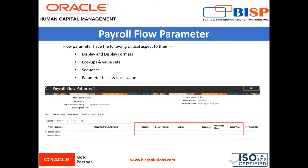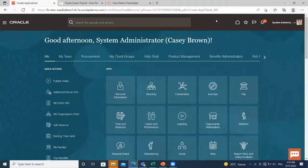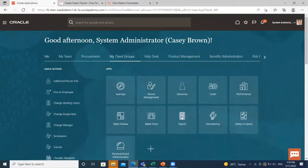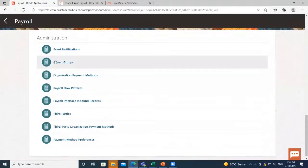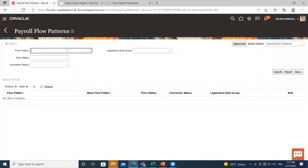Now let's move on to the application where I'll show you how to copy an existing payroll flow pattern. In the next tutorial I'll show you how to create a flow pattern from scratch. On the home page, go to My Client Group, then click on the Payroll option, scroll down to the Administration option, and under Administration you have Payroll Flow Pattern. Let's search for an existing one.